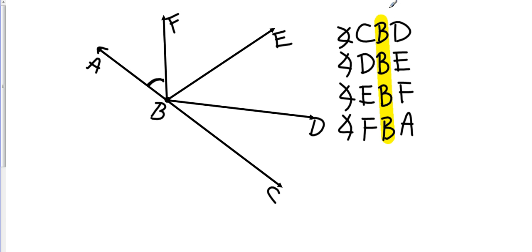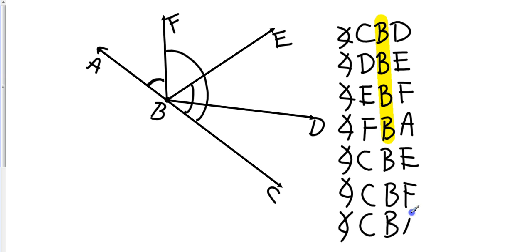Now, there are more angles here. There are some bigger ones. I've got C, B, E right there. I've got CBF right there. Also, I have the actual straight angle itself of CBA. It's a straight line which would be 180 degrees right there.